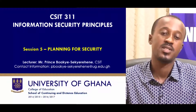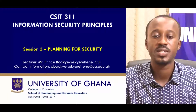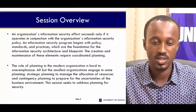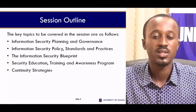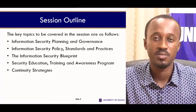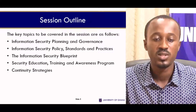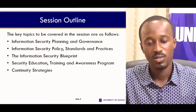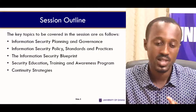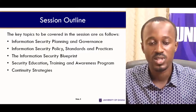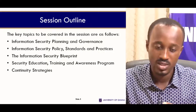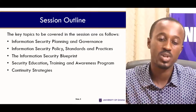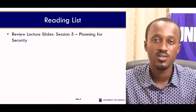Welcome to session five of CSIC 311 Information Security Principles. In session five we're looking at planning for security. The session outline covers the following topics: information security planning and governance, information security policy standards and practices, the information security blueprint, security education training and awareness program, and we'll end with continuity strategies.